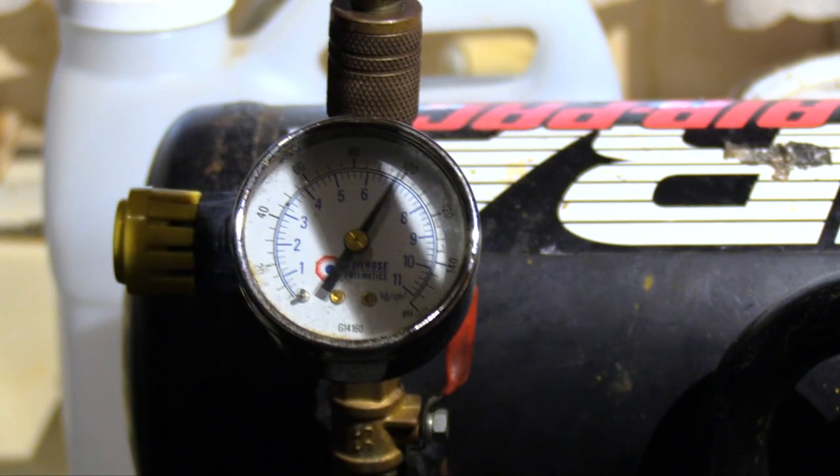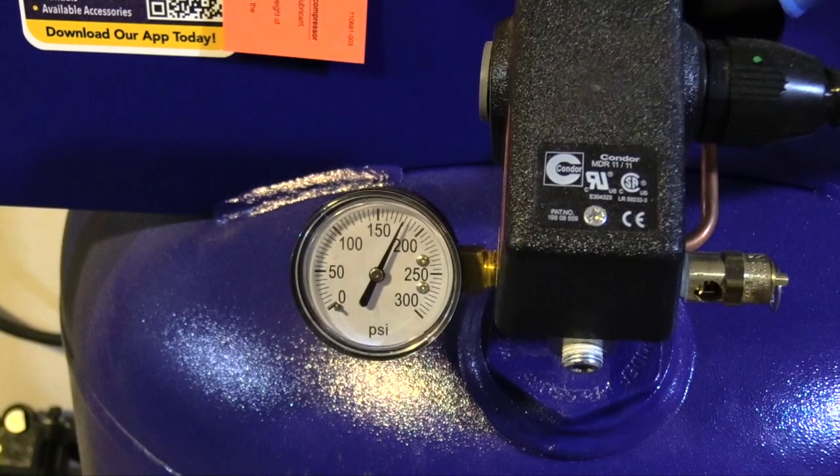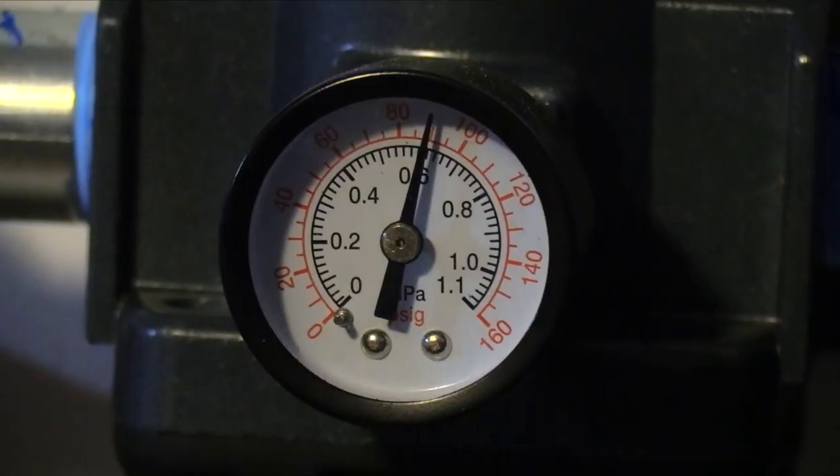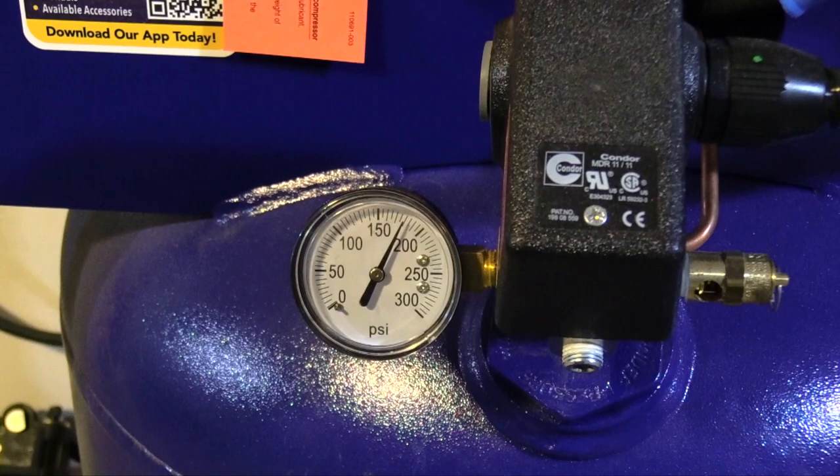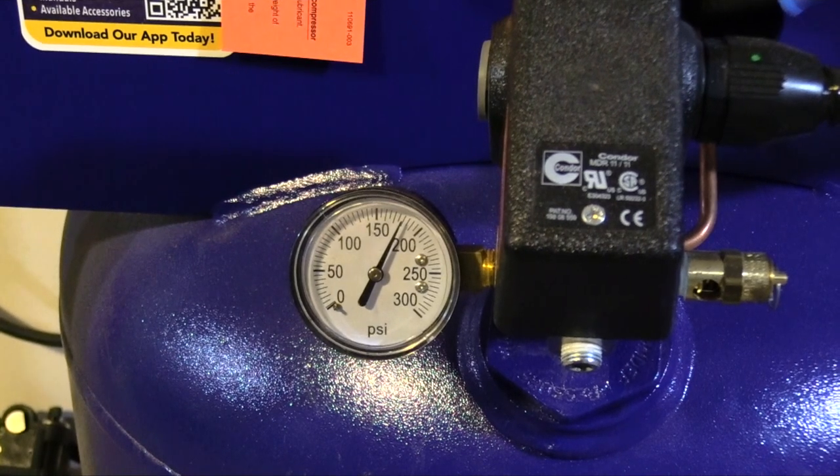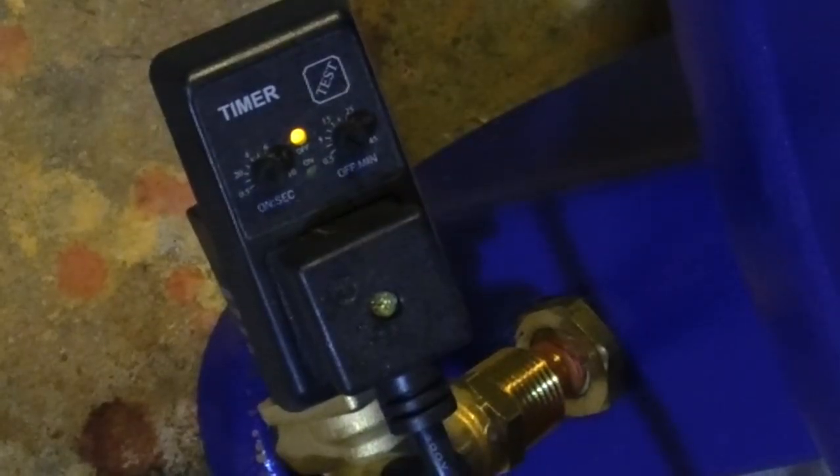On this small compressor the air pressure regulator controls the line pressure and the tank pressure and it's set to 100 pounds. On the Quincy there are two different regulators. The tank pressure is set at 175 pounds and the line pressure is set at 90 pounds. This is an 85 pound reserve before the line pressure begins to decrease.